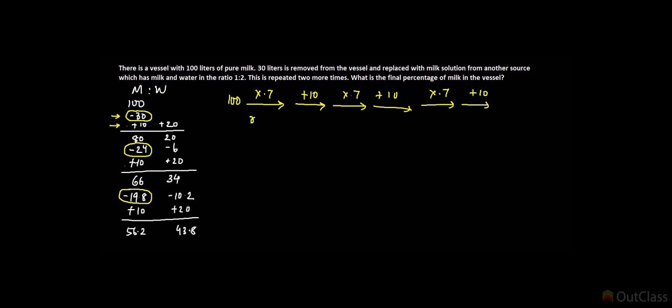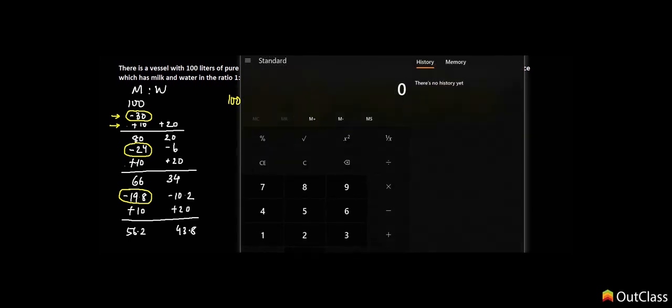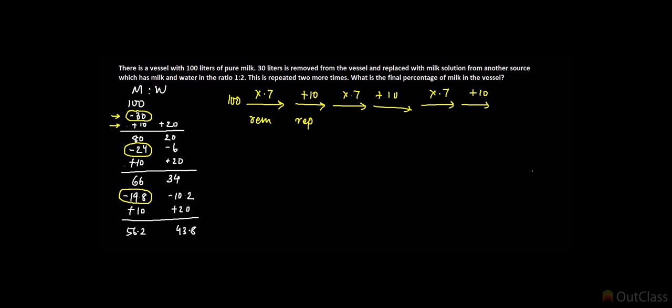We can look at what's happening here. Let's take a calculator. Type in 100 ×0.7—that's the removal—+10 is the replacement, ×0.7 +10, ×0.7 +10. That equals 56.2.